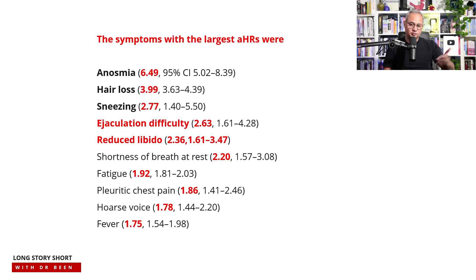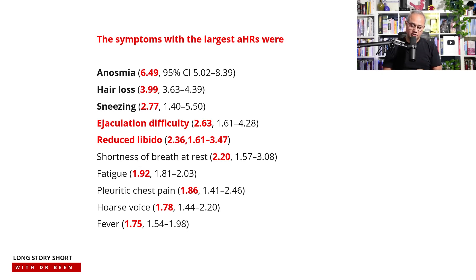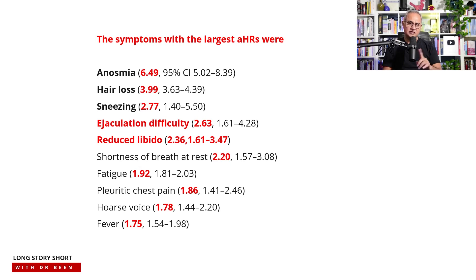Shortness of breath at rest — distinct from exertional dyspnea — was associated with 2.2 times the risk. Fatigue was 1.92 times, pleuritic chest pain 1.86 times, hoarse voice 1.78 times, and fever 1.75 times. It should be noted this data is from before the Omicron variant, so it is somewhat outdated from a variant perspective.